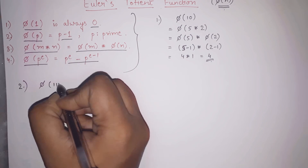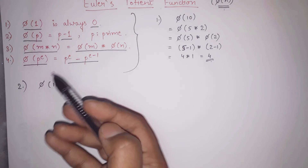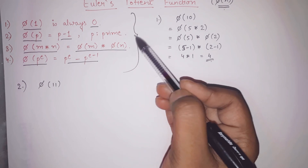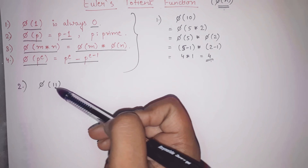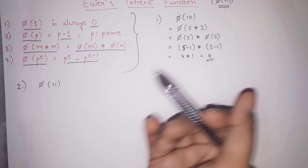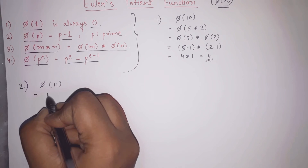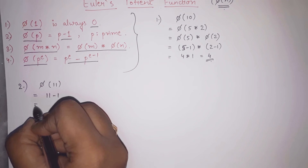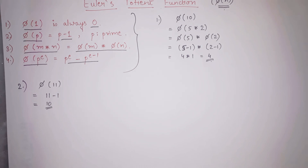Let us find phi of 11. First we check: is 11 prime? Yes — 11 is prime. So directly we write p minus 1, which is 11 minus 1, that is equal to 10. It is that simple.